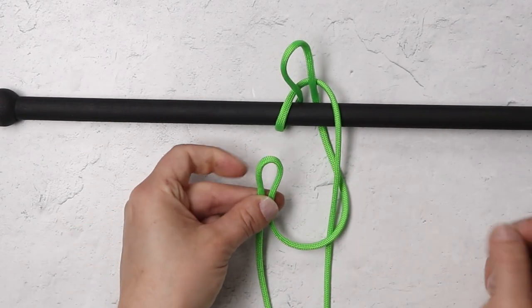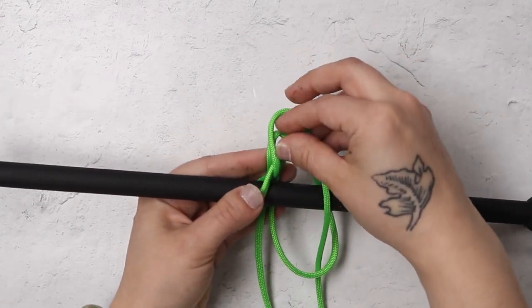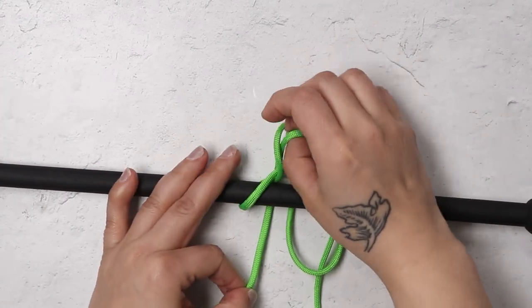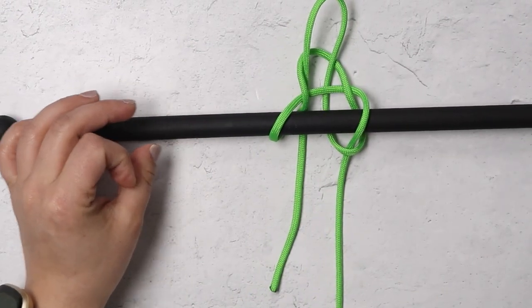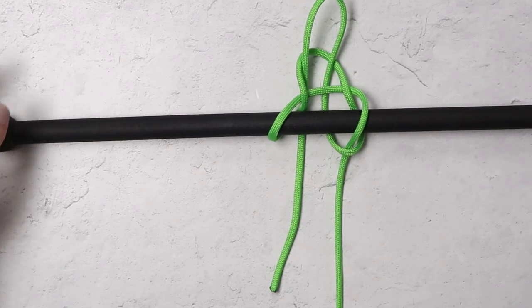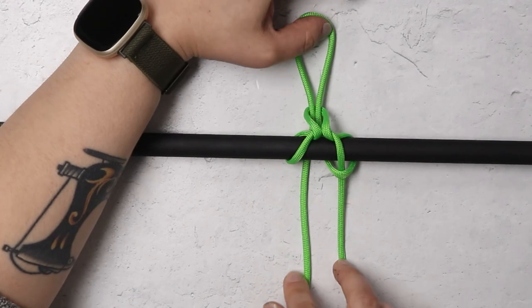Make one last bite and pass that again behind your dowel and through the loop at the top. To tighten this one up you can pull on the right hand side of that final loop while pulling down on your right hand working end.